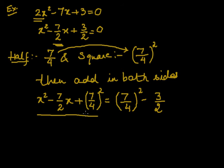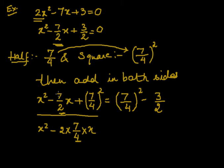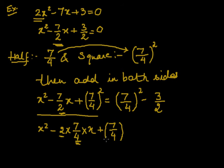As we know, on the left hand side we have to just make a perfect square by arranging all the terms. The first term is x, and the next term is 2 into 7 by 4 into x. In this step, there is a difference: in the last equation the coefficient of x was 7 by 2, but in this equation the coefficient will turn into 7 by 4, because we multiplied it by 2 and divided it by 2, plus 7 by 4 whole squared.